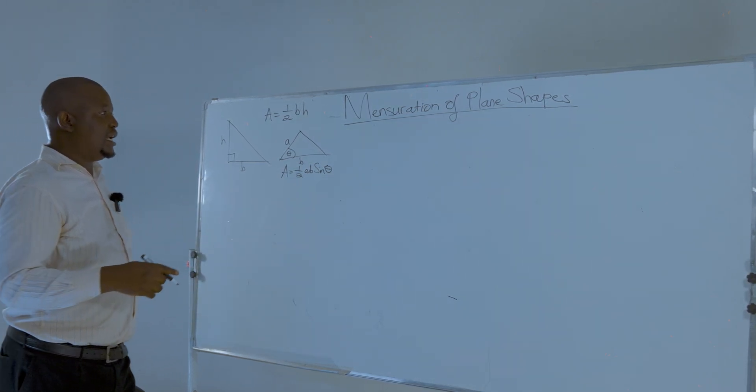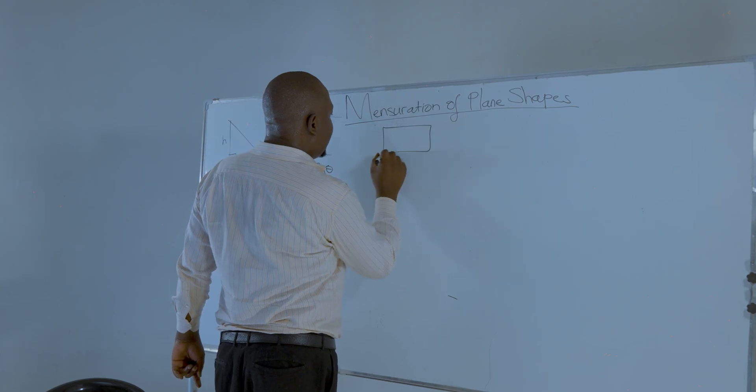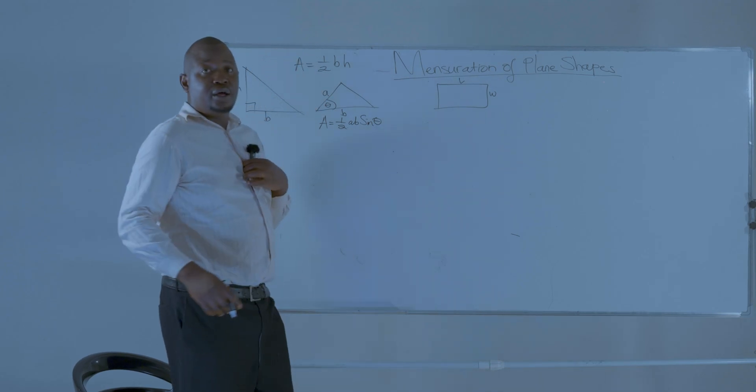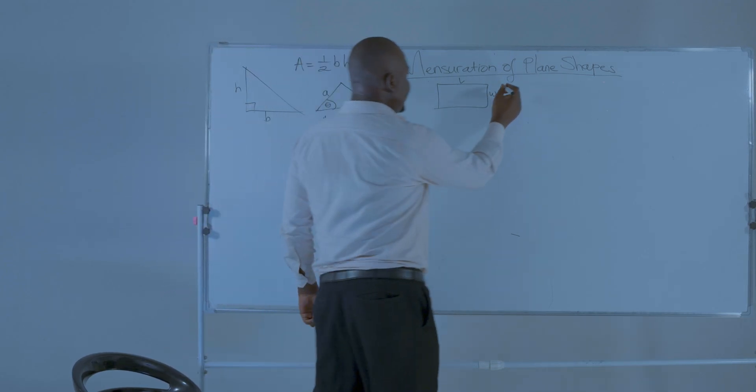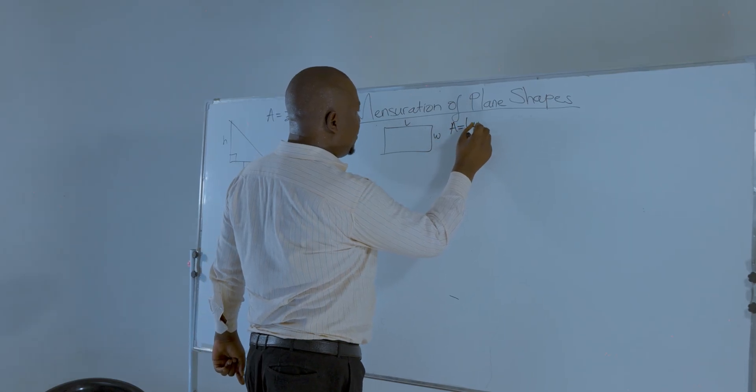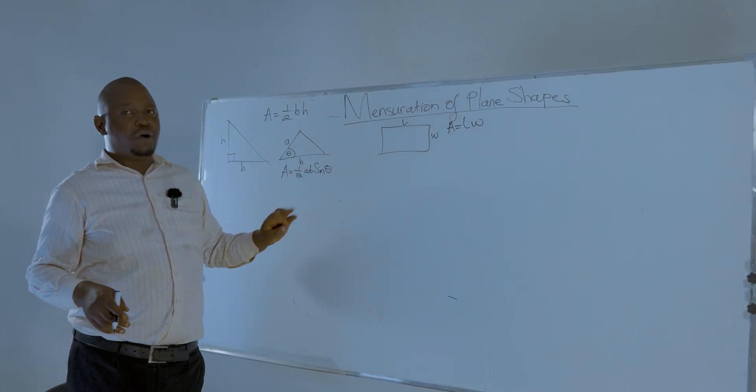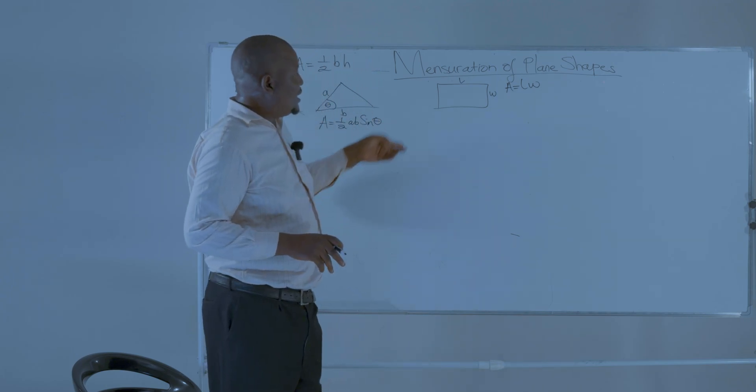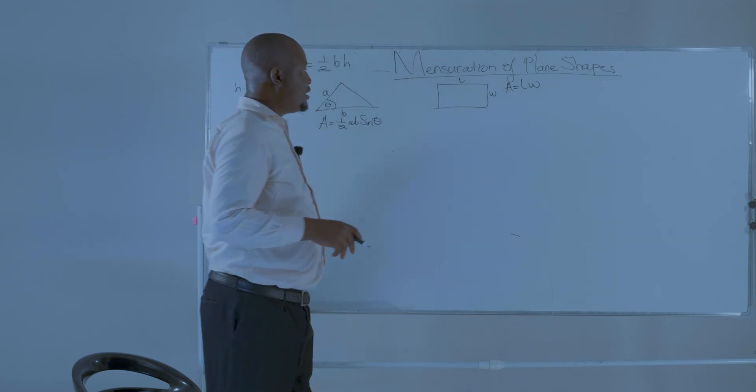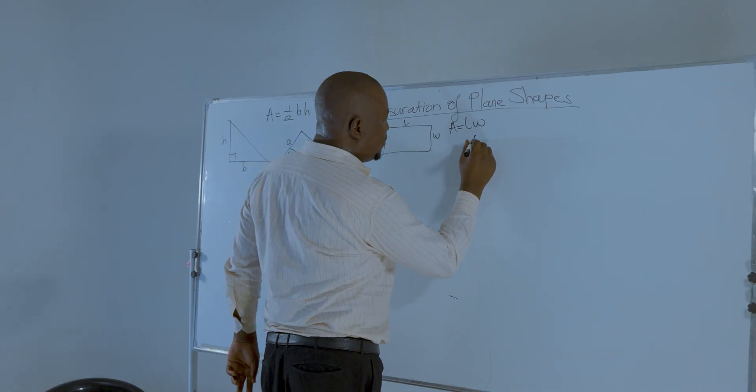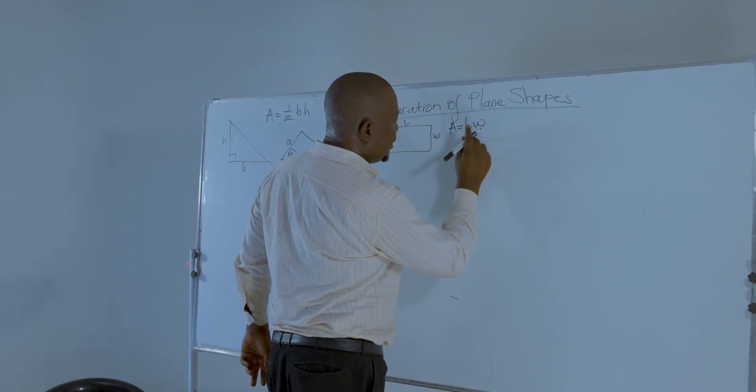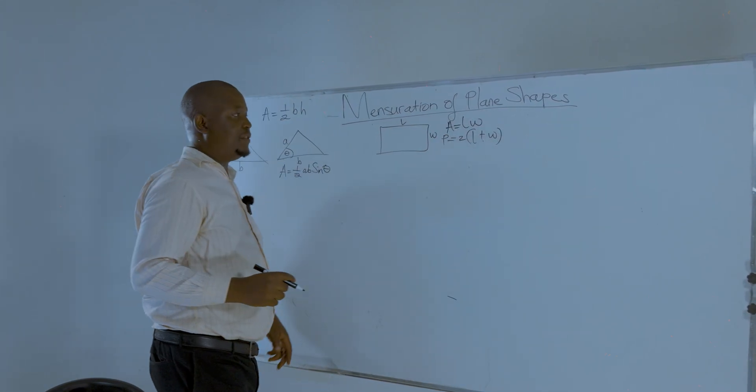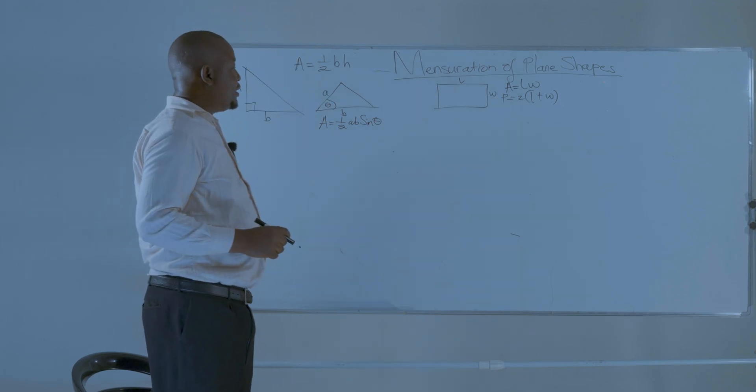Next, we are going to look at the rectangle. The rectangle has the length and the width. So the area of a rectangle is given by length multiplied by the width. And the perimeter of the rectangle, remember perimeter is the distance right around an object, the distance right around the rectangle can be given by length plus width, length plus the width, everything multiplied by two. This is the perimeter of the rectangle.